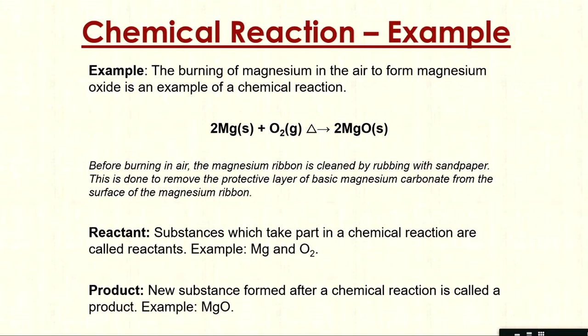The burning of magnesium in air to form magnesium oxide is an example of a chemical reaction — magnesium reacts with oxygen to form magnesium oxide. Before burning in air, the magnesium ribbon is cleaned by rubbing with sandpaper. This is done to remove the protective layer of basic magnesium carbonate from the surface of the magnesium ribbon. The reactants are magnesium and oxygen; the product is magnesium oxide.